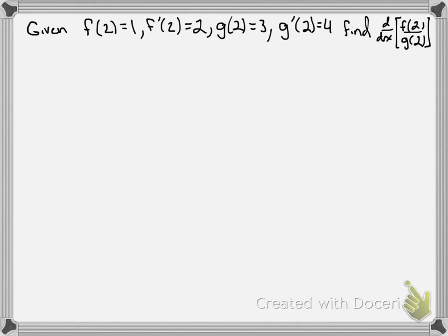In this problem, we're given the values of f and g at 2 and their derivatives at 2, but not the functions. And then we're asked to find the derivative of their quotient at 2.